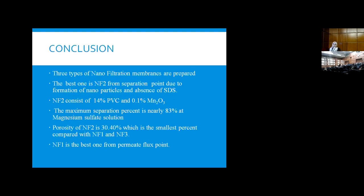In conclusion, three types of nanofiltration membranes were prepared. The best one from separation point of view is NF2 with 10% PVC. The maximum separation is 83% for magnesium sulfate solution. The porosity is 30%, which is the smallest percent. NF1 membrane is the best one from the permeate flux point.